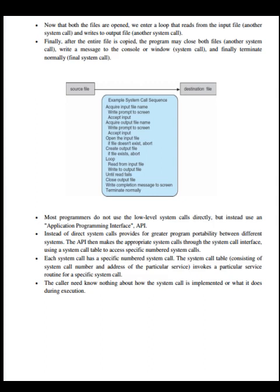Most programmers do not use low-level system calls directly, but instead use an Application Programming Interface (API), which provides general program portability between different systems. The API makes the appropriate system calls through the system call interface using a system call table to access specific numbered system calls. Each system call has a specific number. The system call table contains system call numbers and addresses of particular service routines. The caller needs to know nothing about how the system call is implemented or what it does during execution.